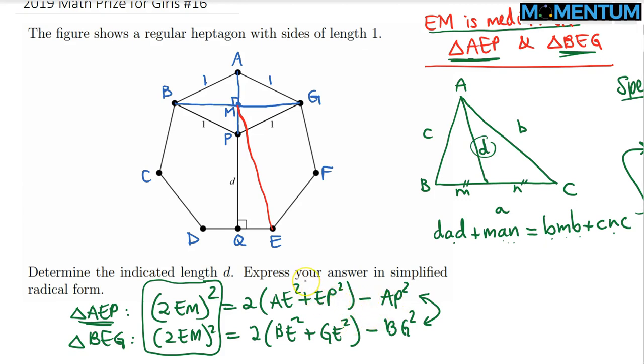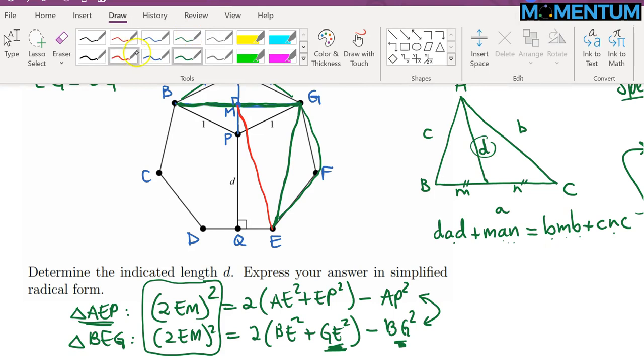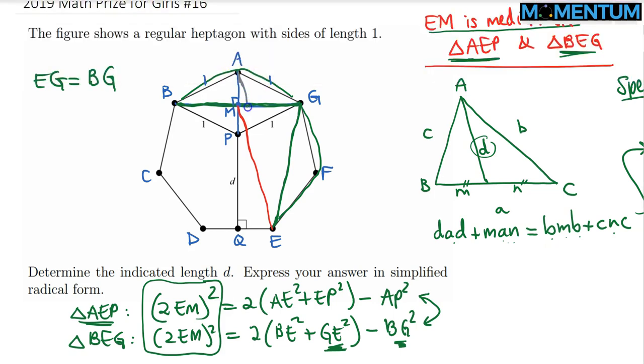Before we go further, one quick trick which is super useful is the fact that if you inspect EG, it's clear that it spans 1, 2 edges, as does BG. Both of them span 1, 2 edges. So as a result, EG equals BG. That's very convenient because we have an EG term and a BG term. And secondly, we have that AE, if you check this length, it spans 1, 2, 3 edges. And AE equals, conveniently, there's another one which spans 3 edges, and it is EB. So AE also equals EB.